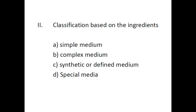The second classification of media is based on ingredients — what the composition of the media contains. There are four different types of culture medium depending upon the composition of ingredients: simple medium, complex medium, synthetic or defined medium, and special medium. We will see each one by one.